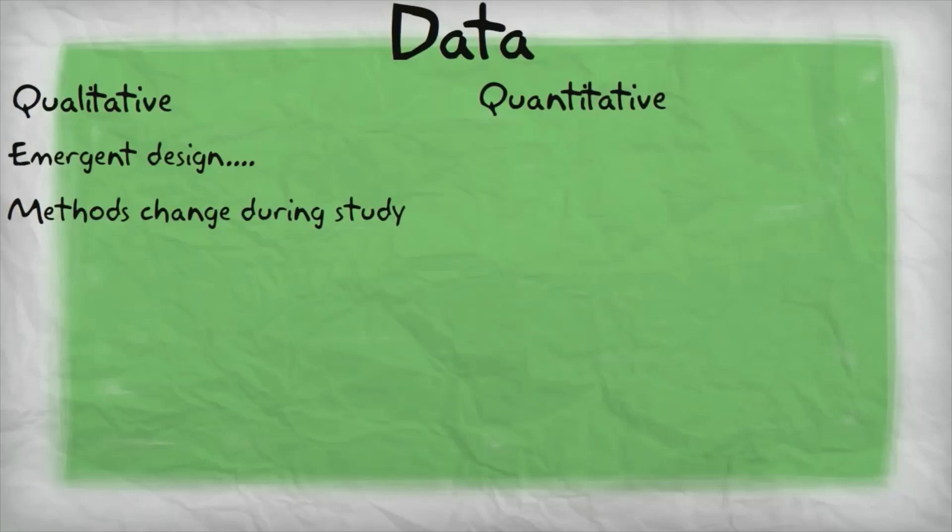The data for quantitative research is in the form of numbers. These numbers usually come from what people check off on instruments, which are surveys or questionnaires, or observational checklists and so on. So qualitative research looks at words. Quantitative research looks at numbers.